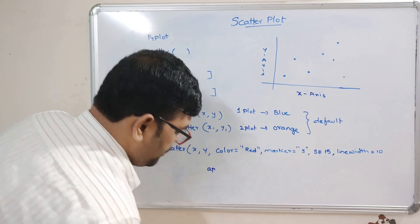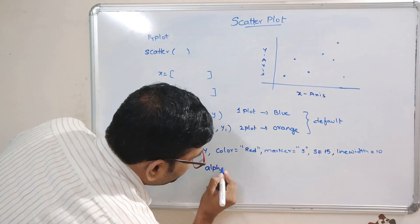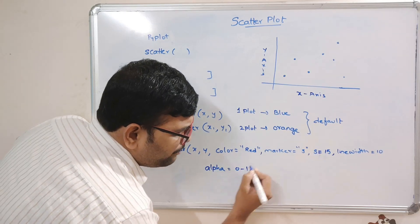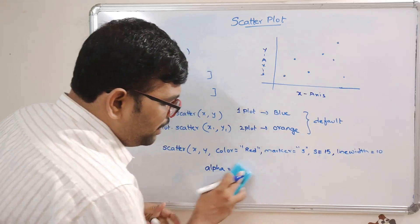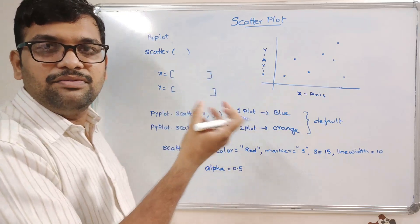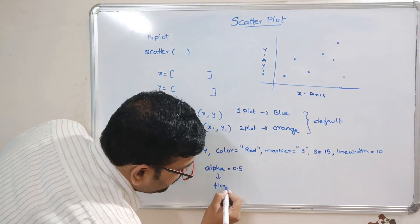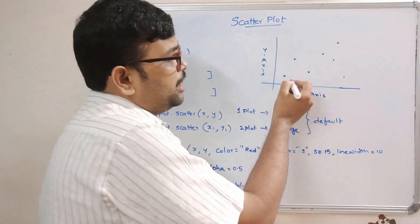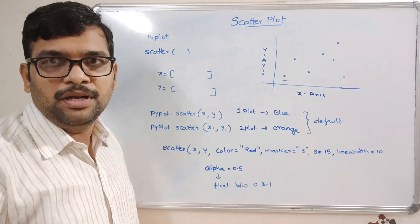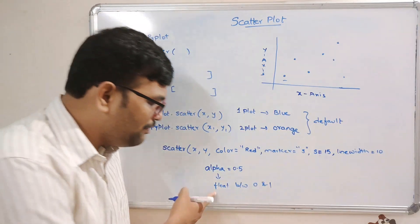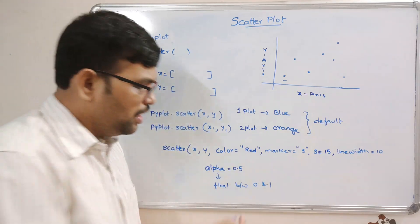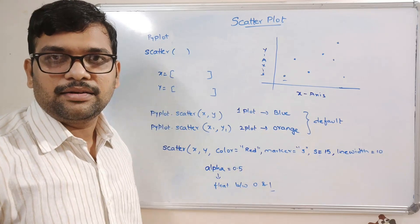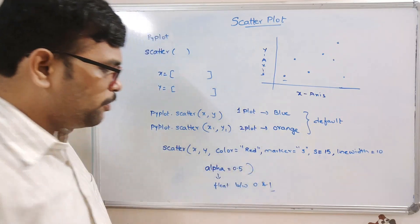There is one more parameter called alpha, which gives the transparency of the color. The alpha value can be between 0 and 1 - any float number. If you give 0, that's completely transparent and the marker will be invisible. If you keep increasing the value, you get more visibility, and at 1 you have complete visibility.